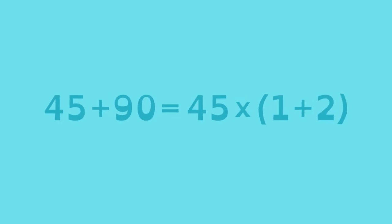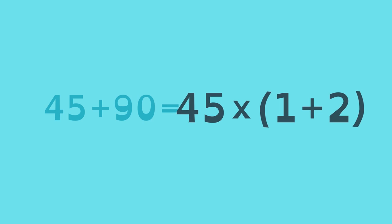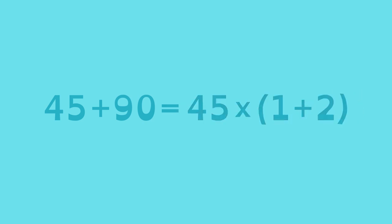Written as an equation, you can see that 45 plus 90 equals 45 groups of one plus two.